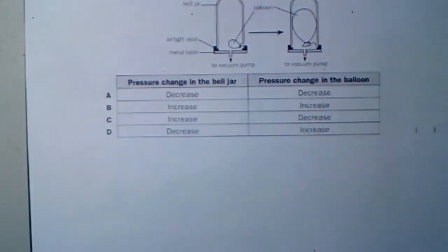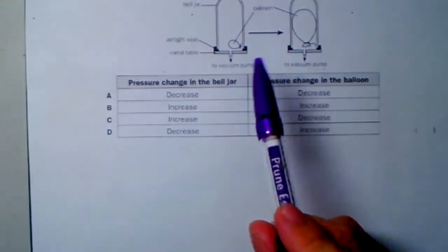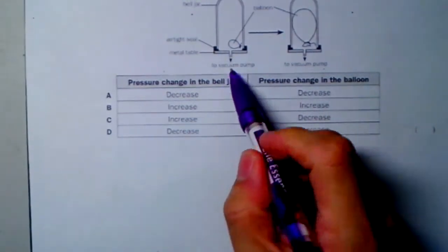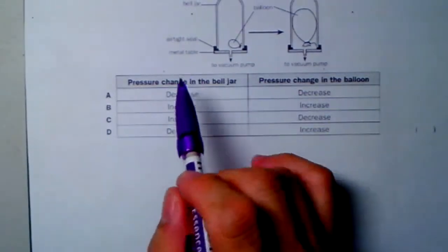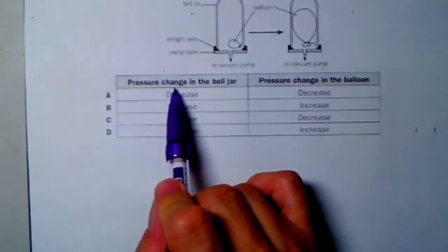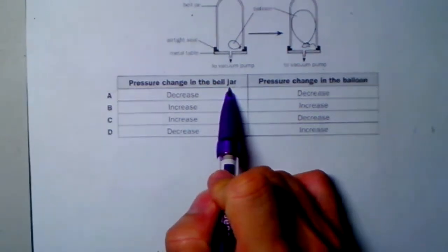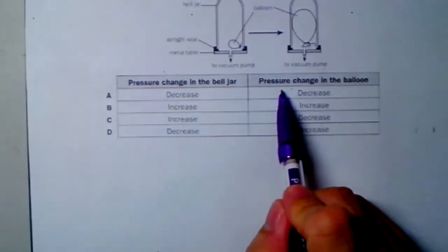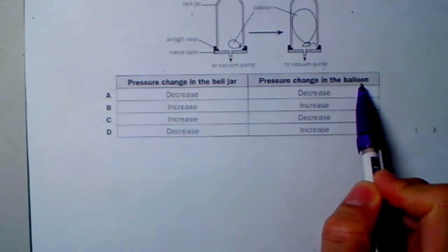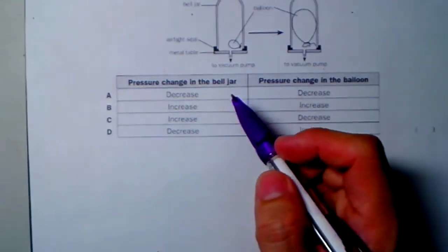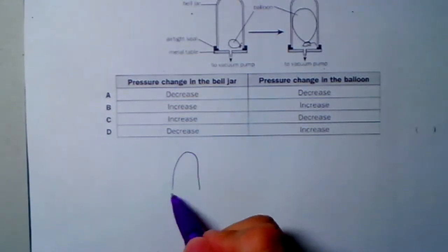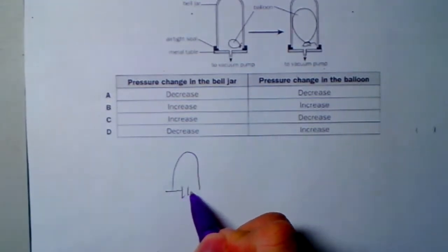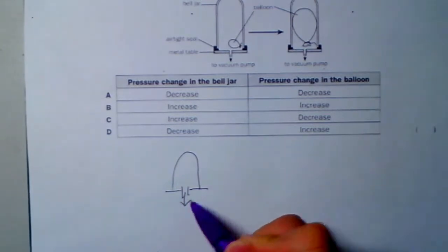In this question, when some air is being pumped out from the bell jar, the question is what happened to the pressure change in the bell jar and what happened to the pressure change in the balloon. Let's look at the bell jar now as air is being pumped out.